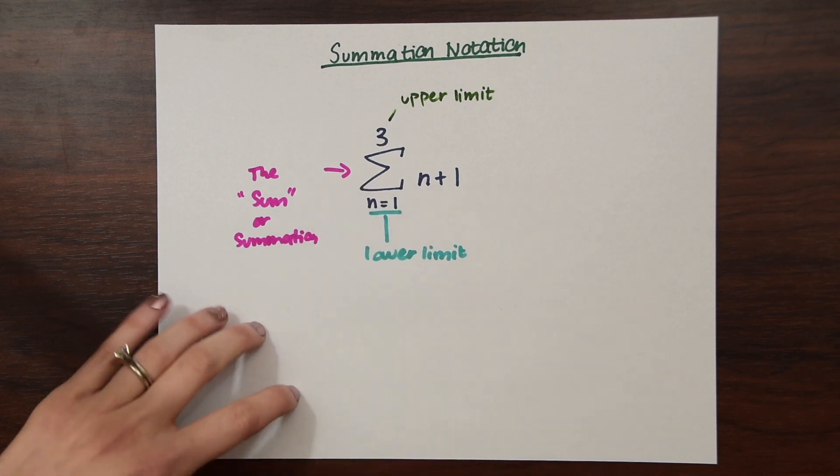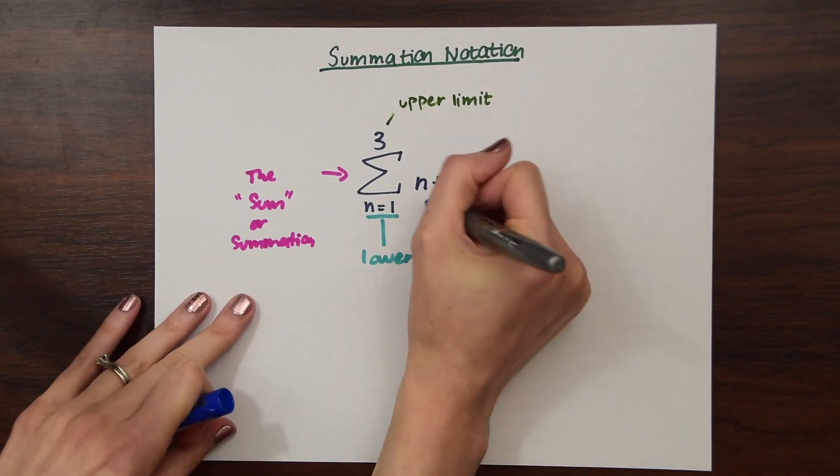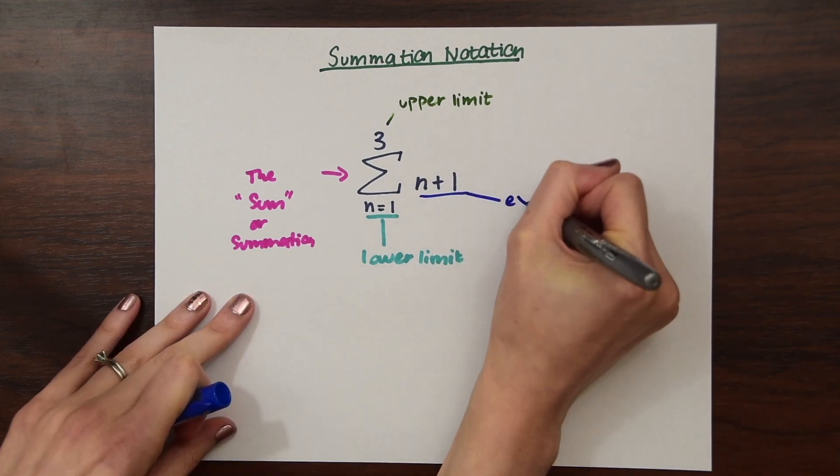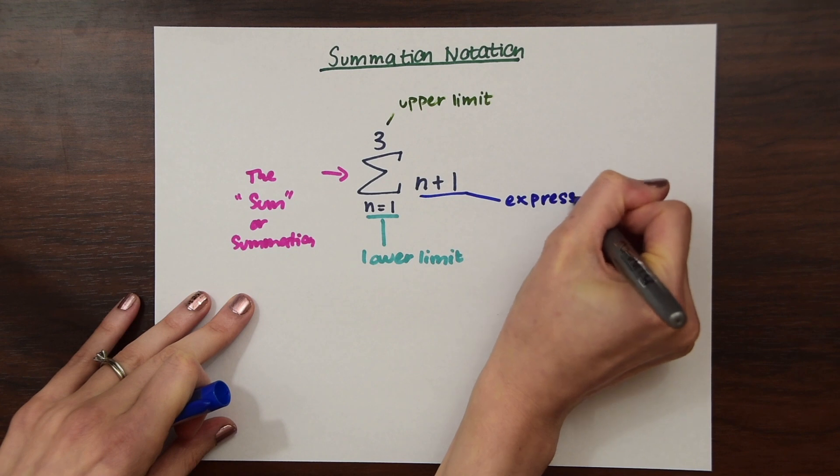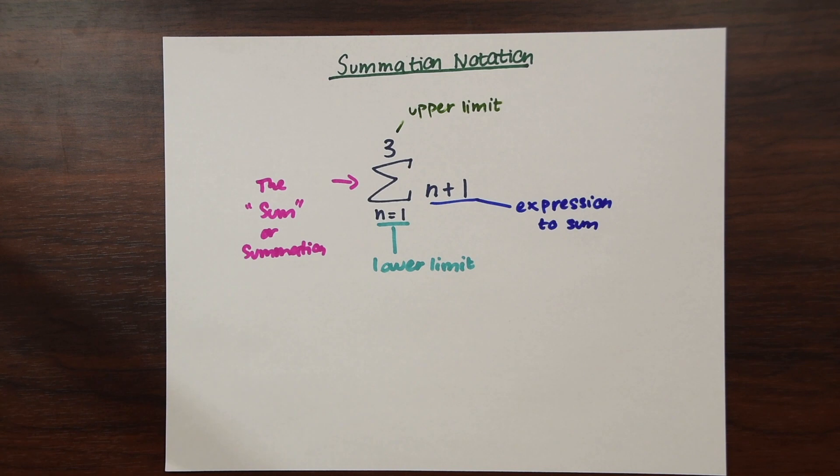We know that we're going to start here. It's our range. It gives us our guideline of what we're going to be summing. And then here on the right, this is just the expression we're going to be summing. So if this doesn't make sense, don't worry too much. I think it's easy to pick up once you see an example.